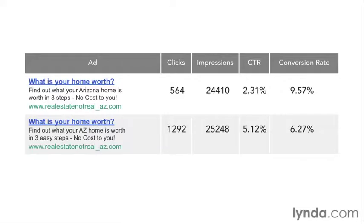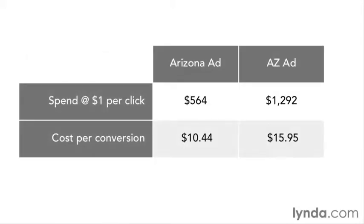Ad 2 only gets about two-thirds as many visitors as ad 1 to fill out that form. Again, these numbers are statistically significant, so ad 1 is better then, right? You can see where this starts to get a little confusing, but let's fight our way through this. Let's say that we're paying about a dollar a click in this example. That means that we're spending $564 on ad 1 and $1,292 on ad 2. Now we can look at the actual number of conversions we saw and do a quick calculation to see our cost per conversion. With ad 1, we're paying $10.44 for each form submission, and with ad 2, we're paying $15.95.